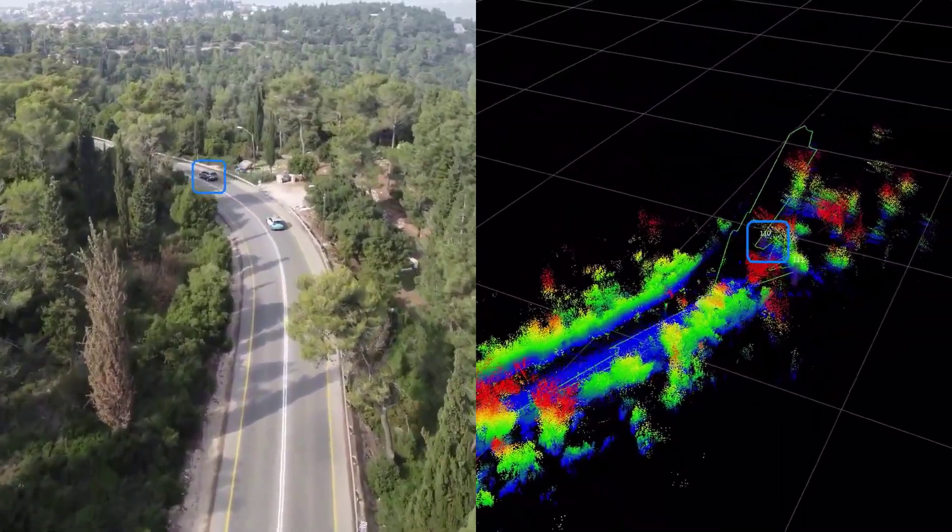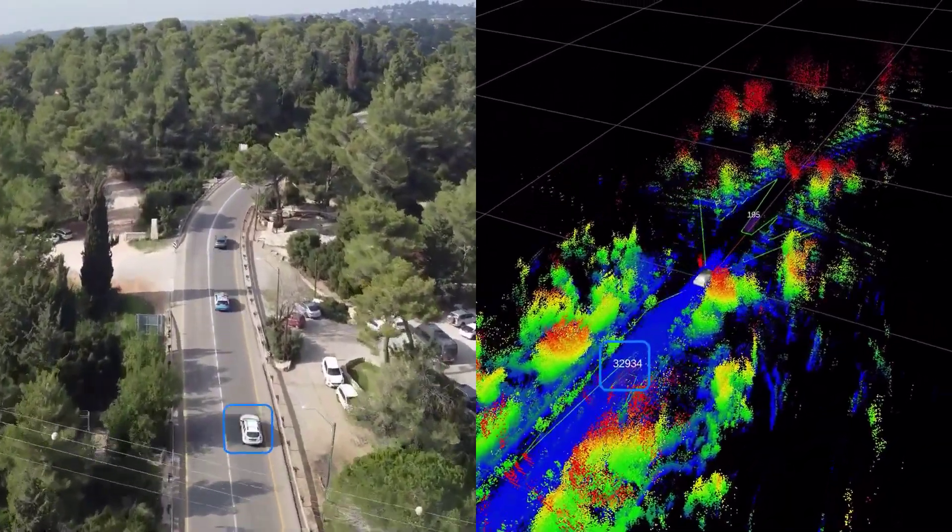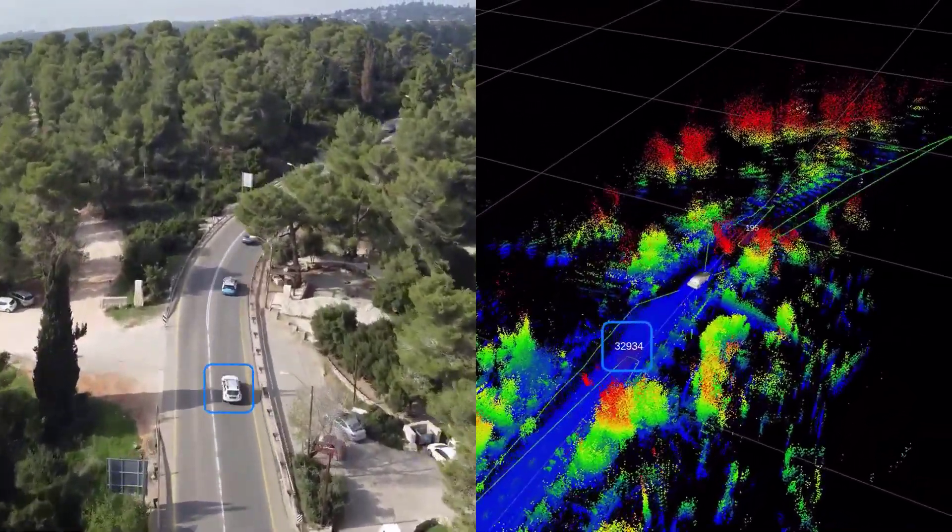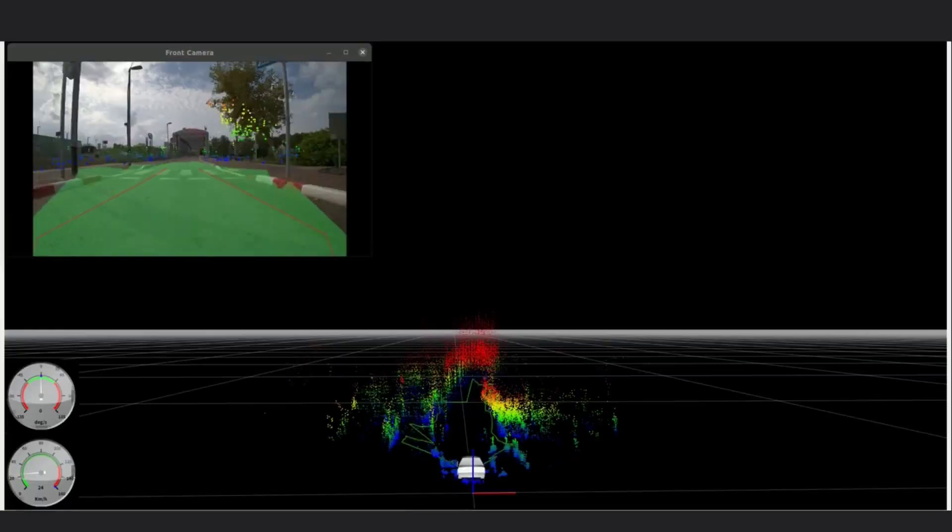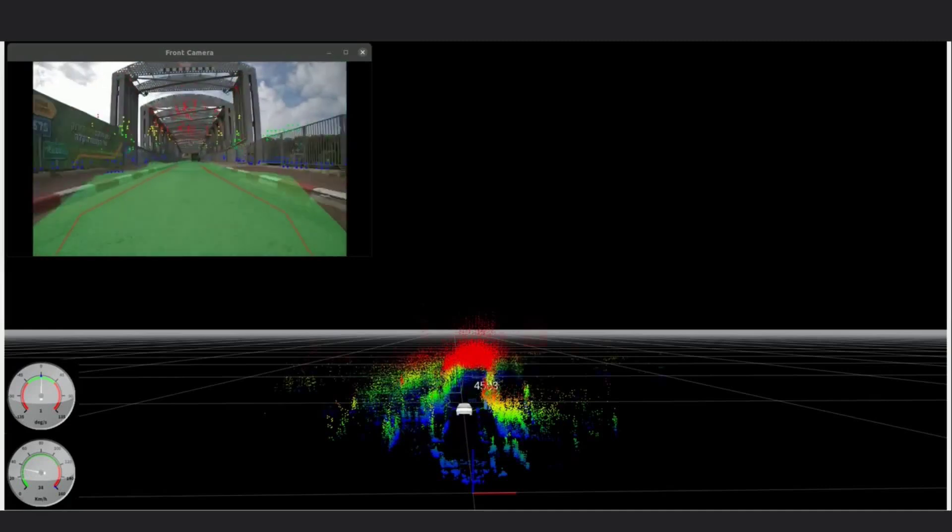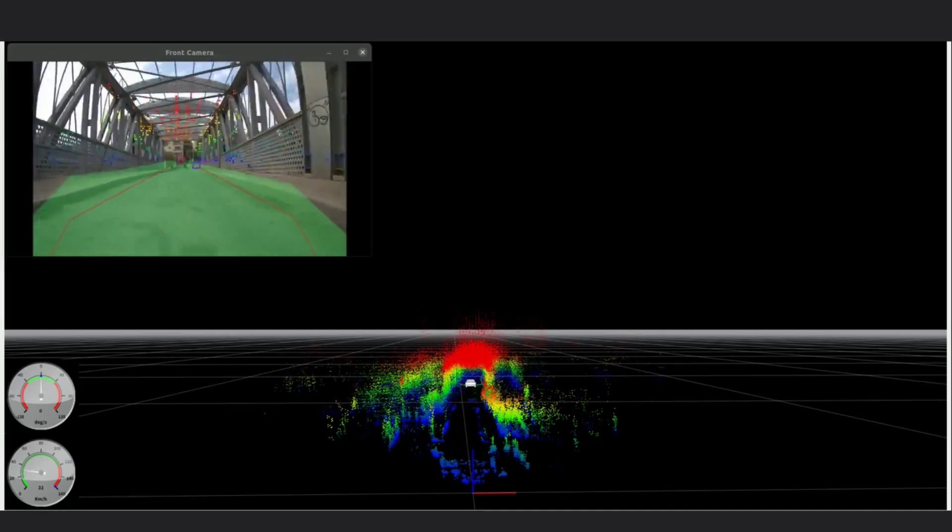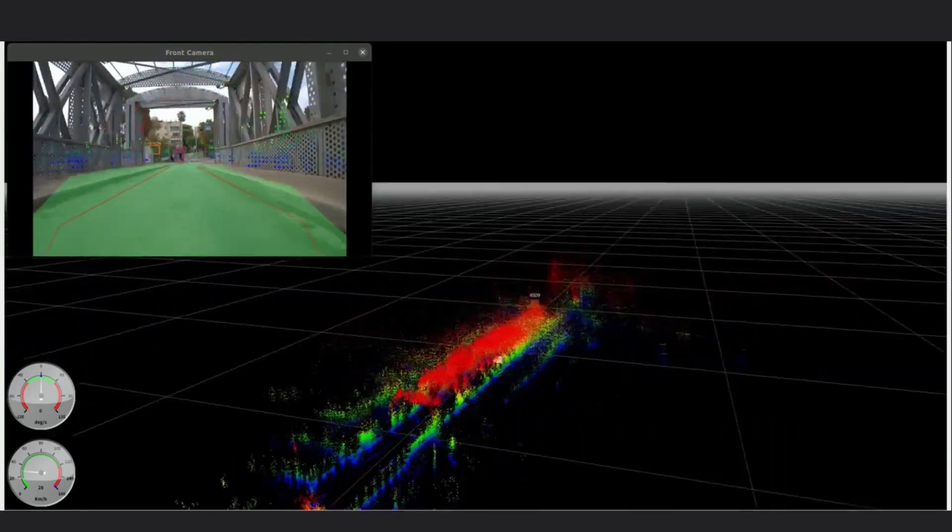Provides precise mapping to distinguish drivable from non-drivable areas, allowing for tracking of surrounding objects, processes scene evolution, and enables critical functions like path planning, emergency braking, and steering, all key features needed for Level 3 and higher autonomy in vehicles.